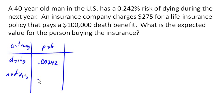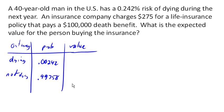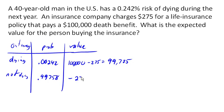And the probability of not dying is the complement of that — 0.99758 — which is 1 minus the probability of dying. The value of dying, purely in monetary terms, is the $100,000 the family receives minus the $275 paid for the policy, giving a net benefit of $99,725. If they don't die, then the financial value of the insurance is negative $275.